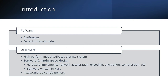As for Data Lord, we're building a high-performance distributed storage system. We think to achieve high performance, we need software and hardware co-design, because only co-design can simultaneously optimize software and hardware. The hardware part implements network acceleration, encoding, encryption, compression, etc. The software part implements other functionalities. Our software is written in Rust, and this is the GitHub link to our open source project. If anyone is interested, please give us some feedback and contributions are welcome.